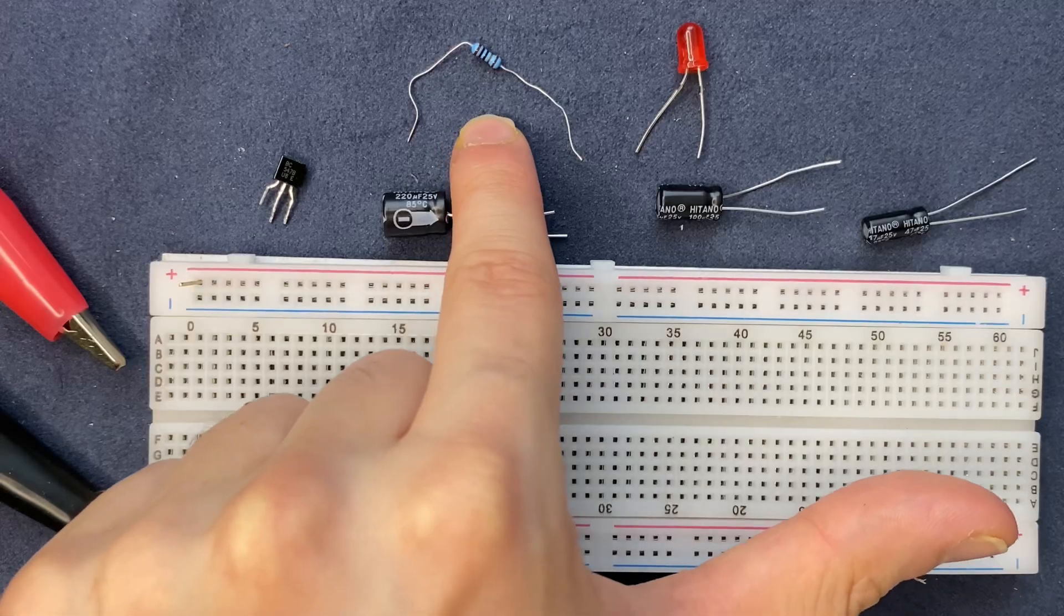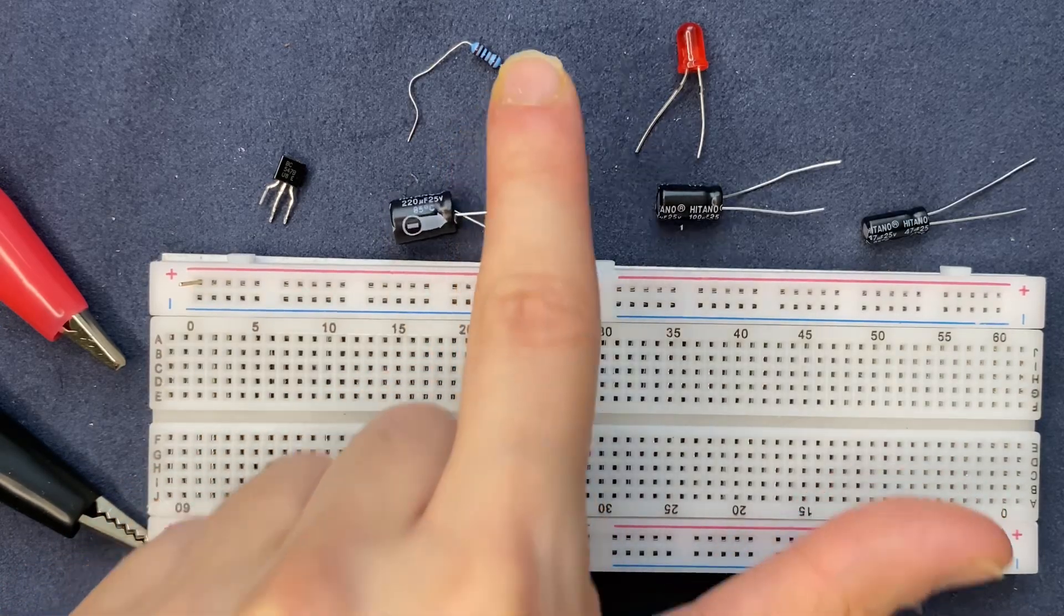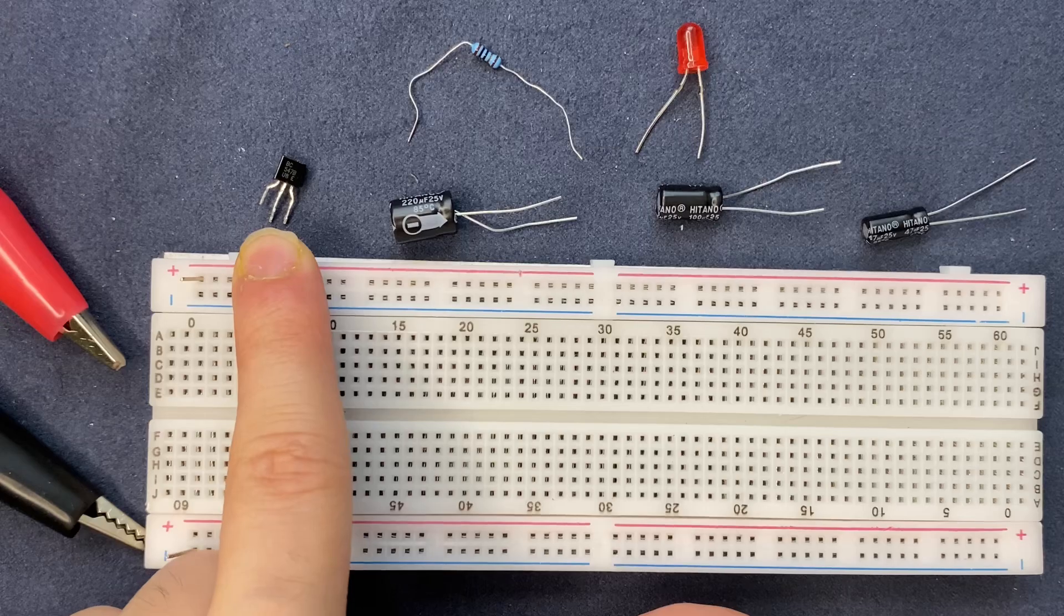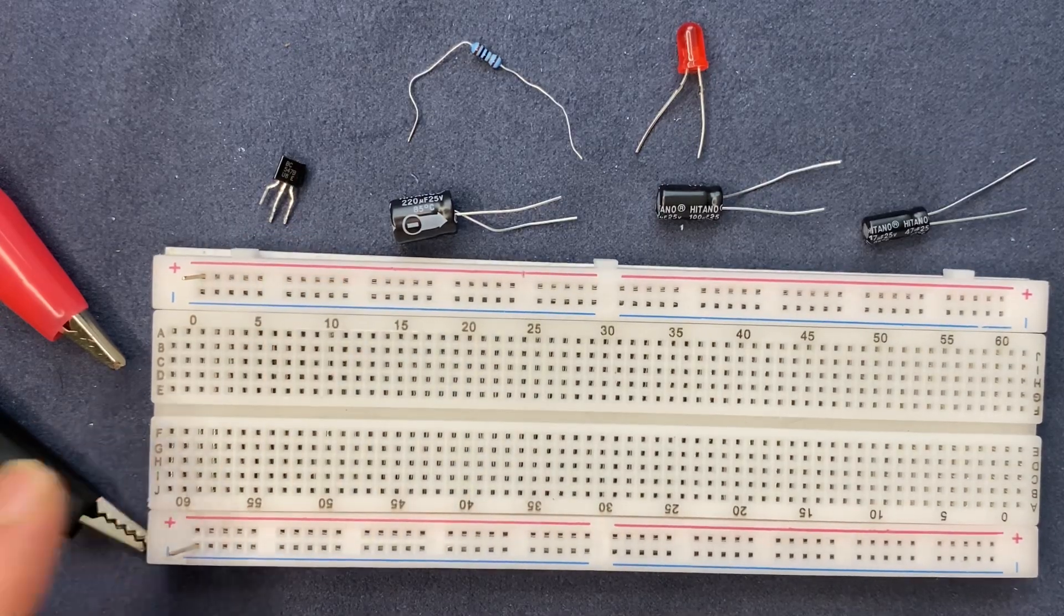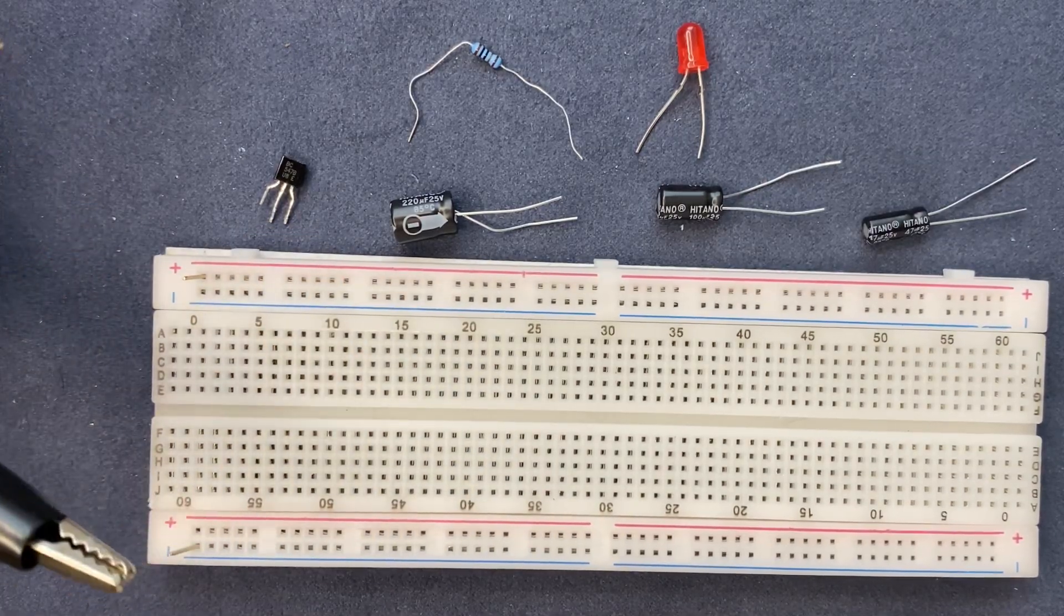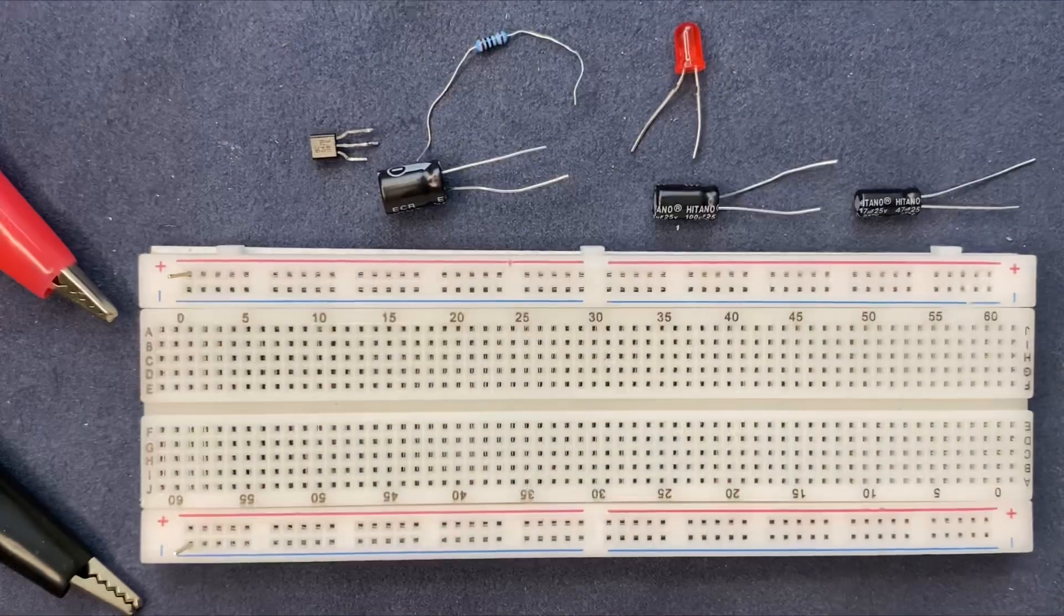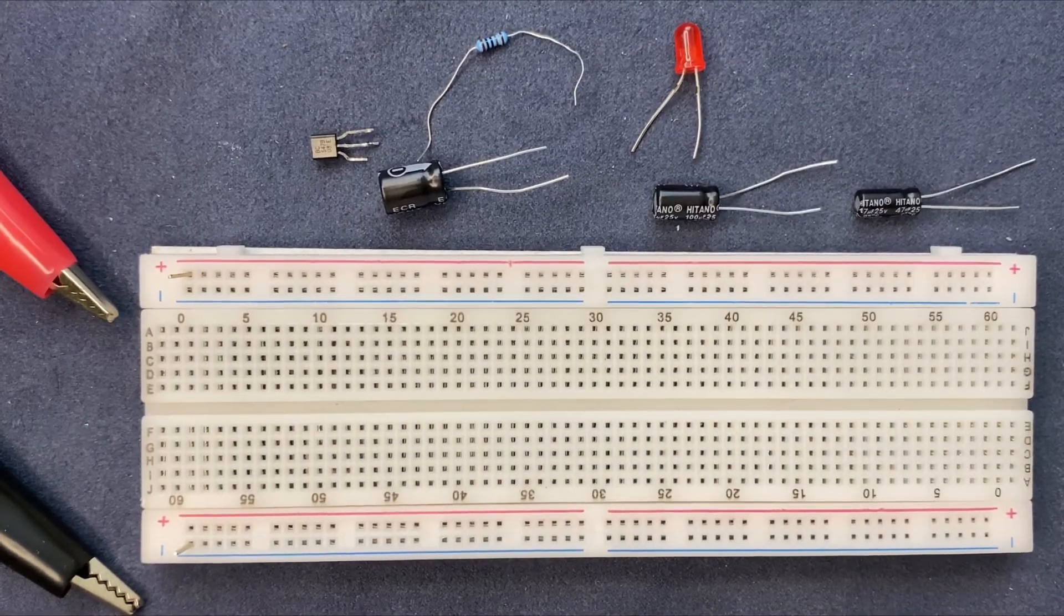I'm gonna use one kilo ohm resistor to limit the current and BC547 transistor. For powering the circuit, I'm gonna use 12 volts power supply. Let's go ahead and build the circuit.